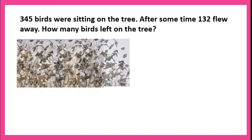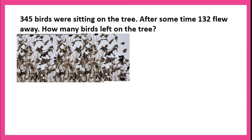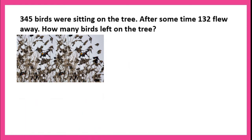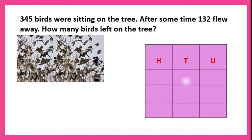345 birds were sitting on a tree. After some time, 132 birds flew away because they went in search of food. How many birds are left on the tree? We write 345 minus 132. Starting from units: 5 minus 2 is 3, 4 minus 3 is 1, and 3 minus 1 is 2. So 213 birds remain on the tree.